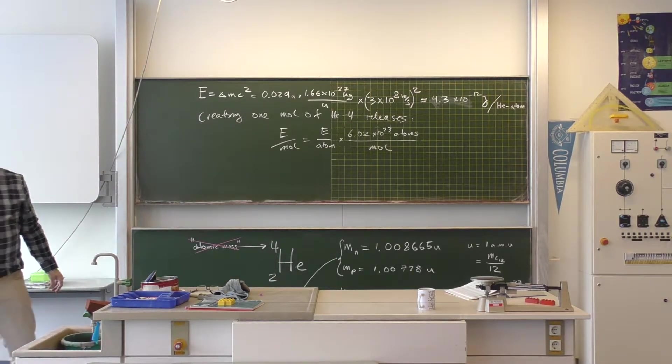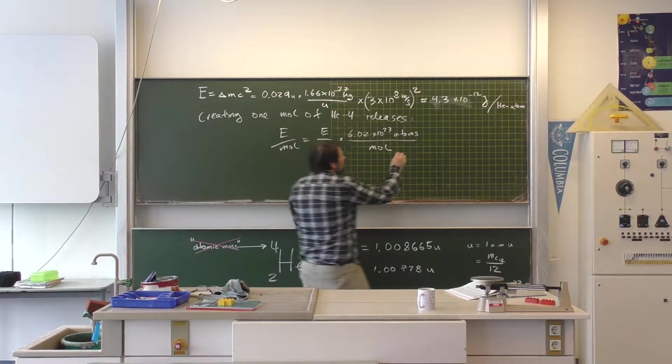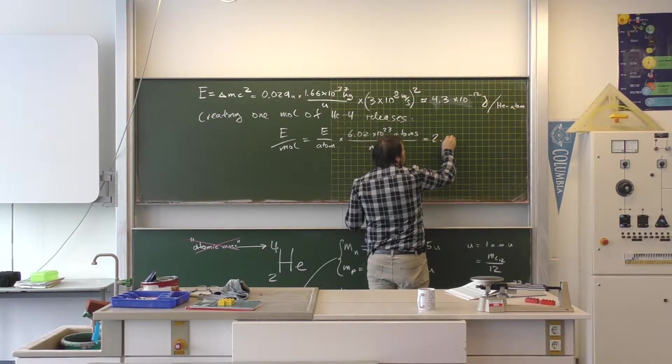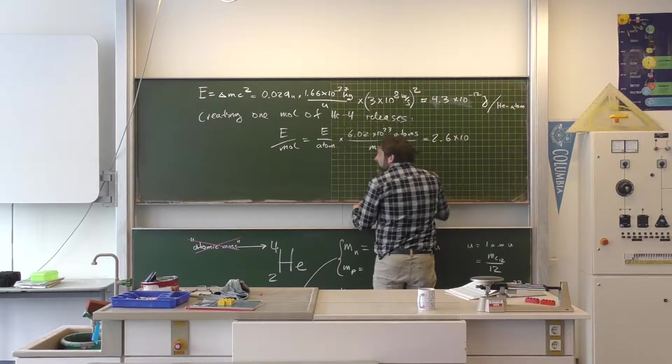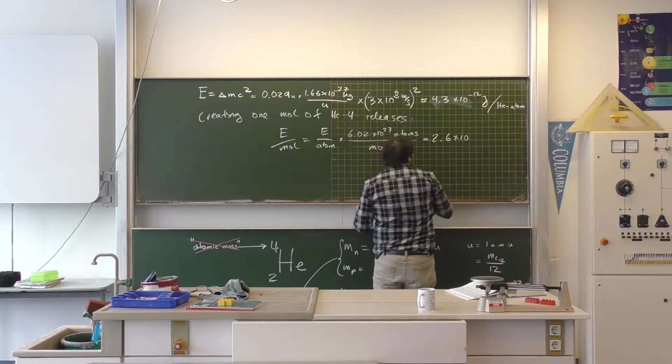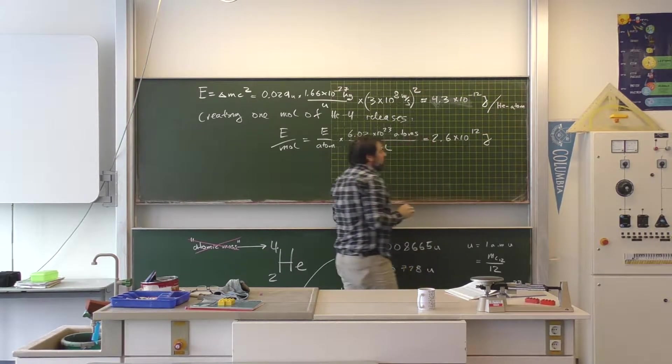We can plug in the value and now we get a different number. Max? 2.59 times 10 to the 12. 2.6 times 10 to the what? 12. 12, aha! Joules.